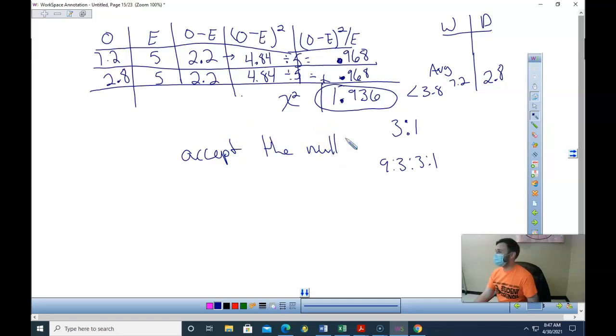If you wrote fail to reject the null, they'd have to give you credit because that's technically what you're supposed to say. Accept the null. We cannot show a preference in where the bugs went or whatever. You know what I mean? We can't show, so again, this is what differentiates you guys from middle school science kids.